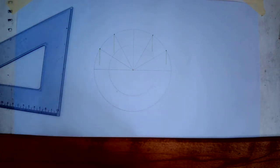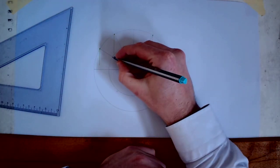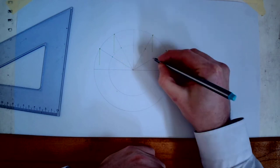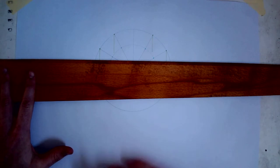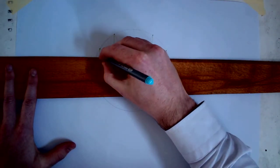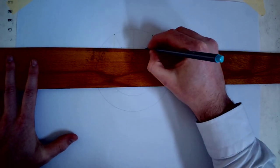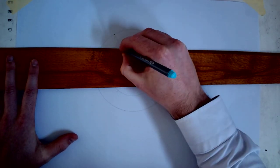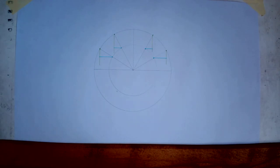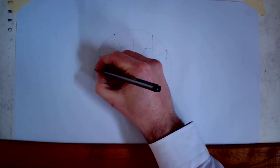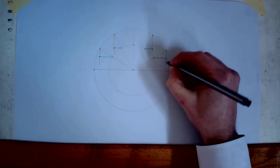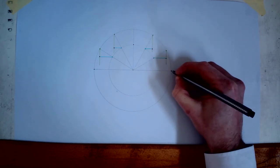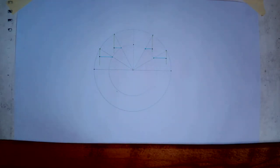Where those 30 degree and 60 degree lines hit our minor axis, we're going to use those points and bring them across using the t-square. That has located each of our points for our semi-ellipse. Those points there.